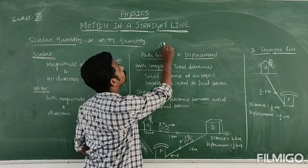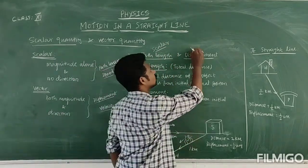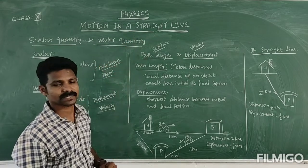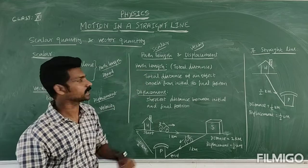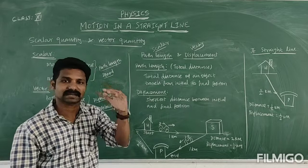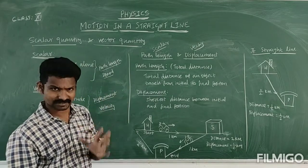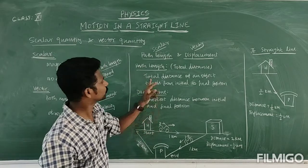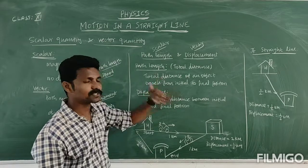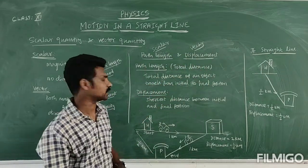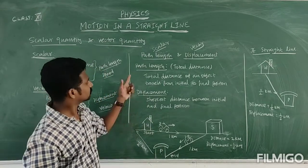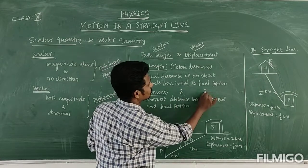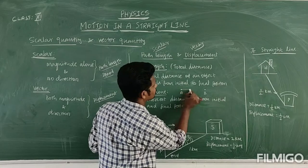Path length is nothing but the total distance covered by an object — the action path covered by the object. In short, path length is the total distance an object travels from one position to another, that is, from the initial position to the final position.